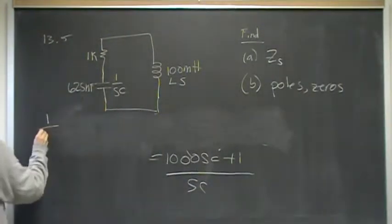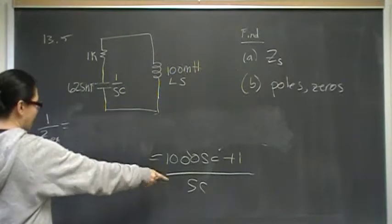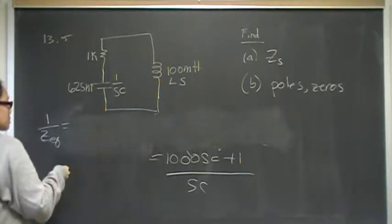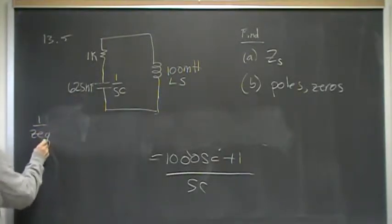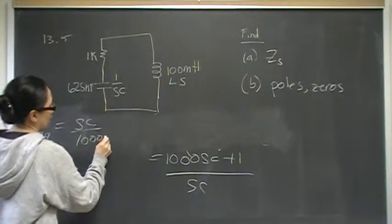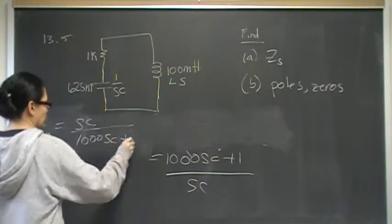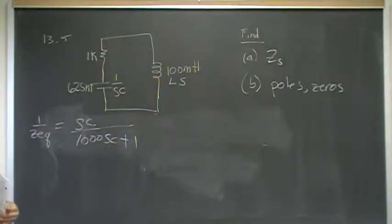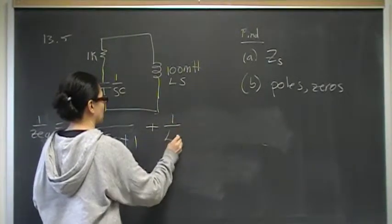Remember that 1 over Zeq is equal to 1 over each of the parallel components. 1 over that is just flipping it around. So, 1 over Zeq is Sc over 1,000 Sc plus 1, and the impedance of the inductor in the S domain is Ls and flipping that over is 1 over Ls.